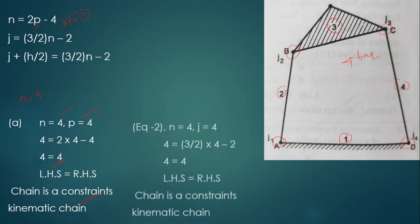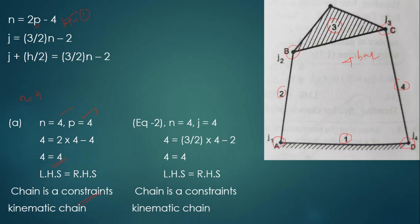Now applying Equation 2 to the same mechanism: j = number of joints. Link 1 and link 2 are joined at one point (joint 1), and there are 4 joints total. Substituting j = 4 into Equation 2 gives 4 = 4, confirming the given chain is a constrained kinematic chain.